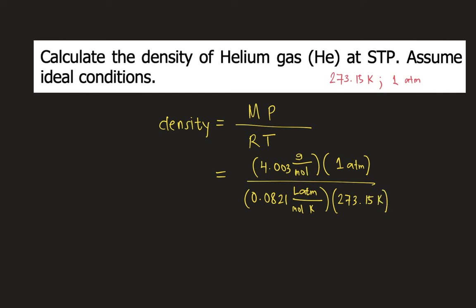If we check how the units would cancel, atm would cancel, moles would cancel, and Kelvin would cancel. Therefore, the unit for density would be grams per liter.